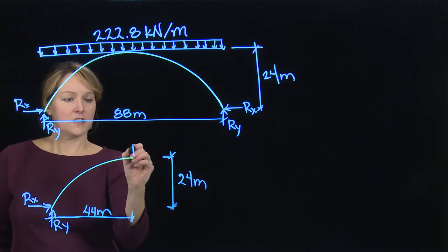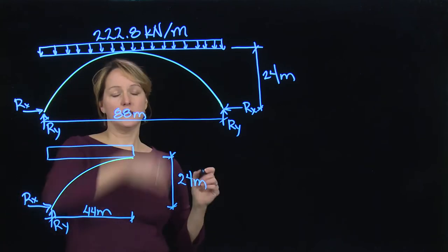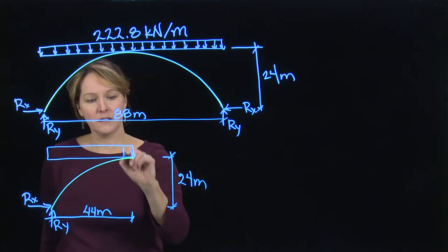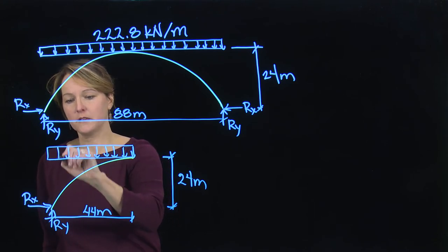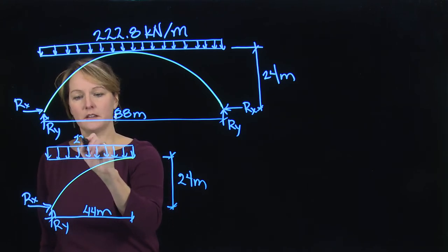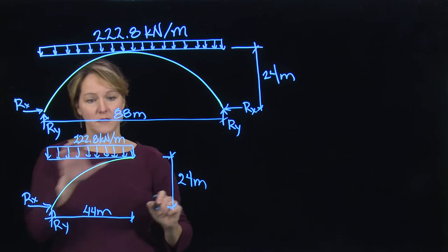My load doesn't change because this is a distributed load. It's got units of kilonewtons per meter, so it's distributed evenly along the whole length. I will leave that as 222.8 kilonewtons per meter, based on the weight of the stone.